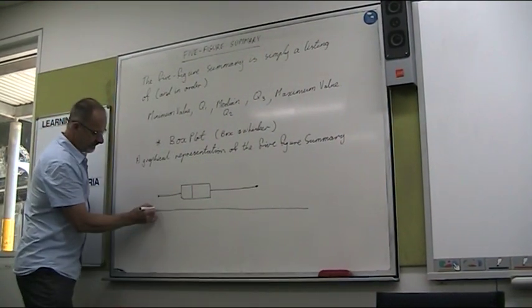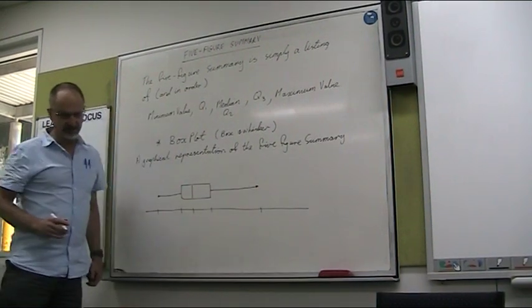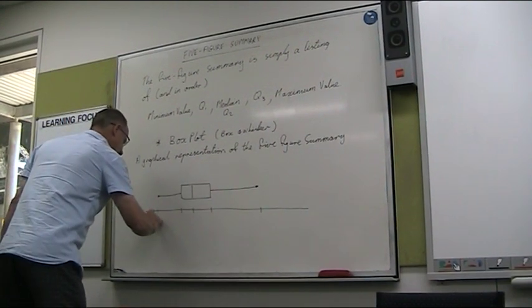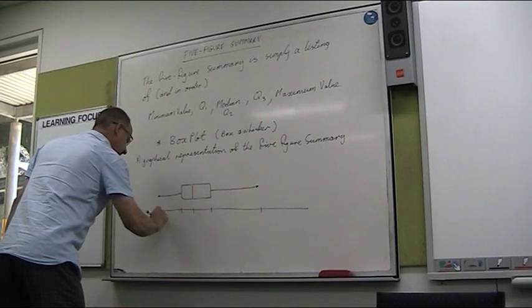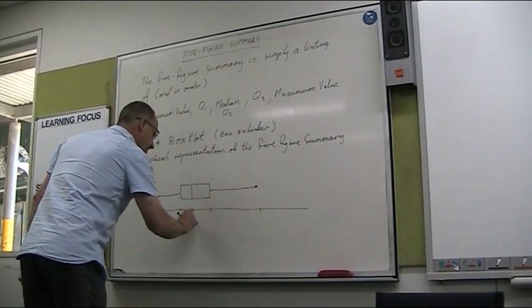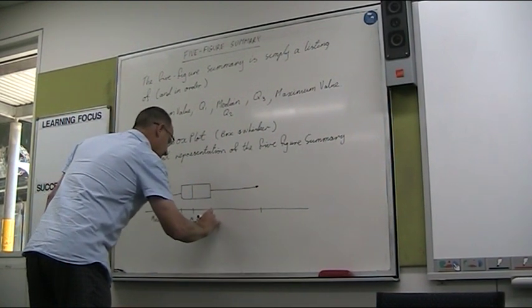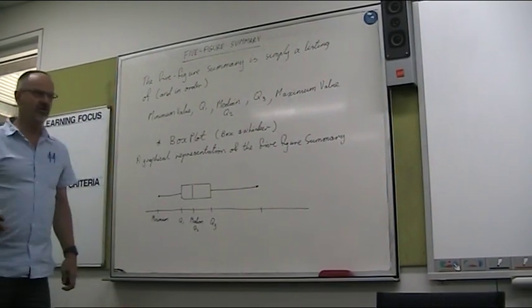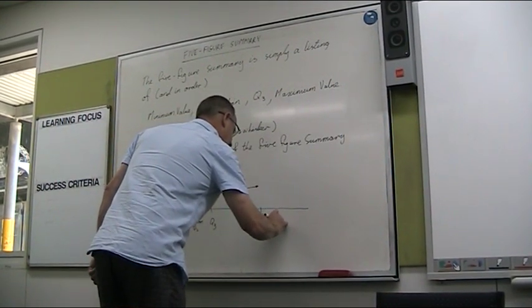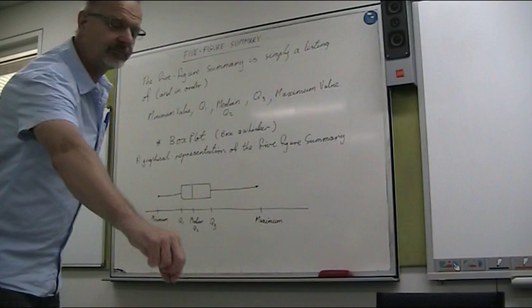And then mark on your number line. I'm going to mark it on the number line, you'd have scale of course, but what I'm going to put is what these things are. So this end here would be your minimum. This front edge of your box is the first quartile Q1. The line in the middle of the box is your median or Q2. Back end of the box is third quartile Q3 or upper quartile. And then the other end of your whisker is the maximum.